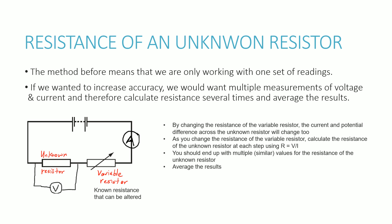The important thing about the variable resistor in this setup is that as we change its value — say from 1 ohm to 2 ohms — it changes the reading on the ammeter and the reading on the voltmeter. This means the current flowing through the circuit changes and the voltage across the unknown resistor also changes as we adjust the variable resistor.